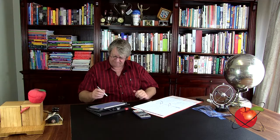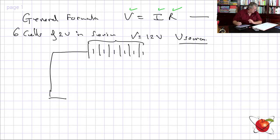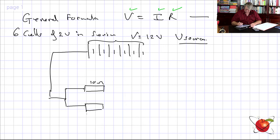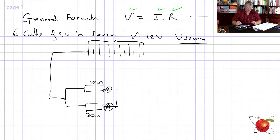What I mean by V source is the voltage of the source — it's where the power, the energy comes from; it's where we get the electron flow from. Now they tell us it's connected with a 10 ohm and a 30 ohm resistor in parallel, and ammeters at various points.